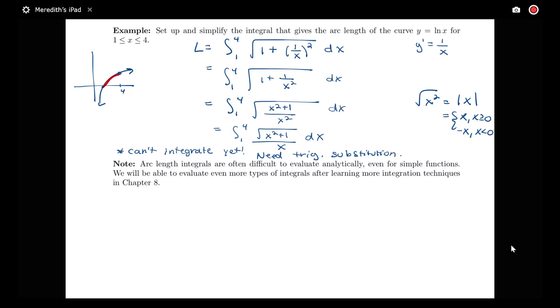So this example is just illustrating that you can start with a relatively simple curve whose arc length you want to determine, and that leads to an integral for computing the arc length that can't be done with the techniques that we have so far. So arc length integrals, in general, are known to be really difficult to evaluate analytically, meaning using paper and pencil kind of methods, even for simple functions.